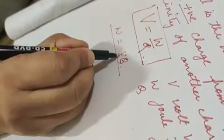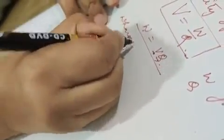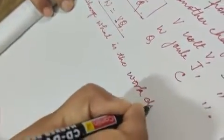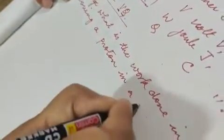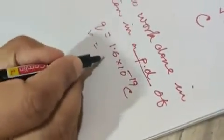From here, we say W is equal to VQ. That is, when a charge is moved in a potential difference, work is said to be done. A simple example. What is the work done in moving a proton in a potential difference of 100 volts? W will be equal to VQ. Q, one proton means 1.6 into 10 to the power minus 19 coulomb. V, I told you 100 volts.